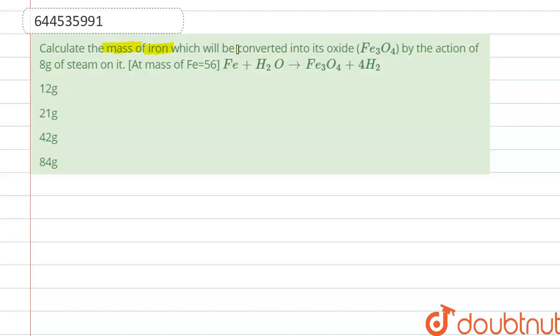Calculate the mass of iron which will be converted into its oxide Fe3O4 by the action of 8 grams of steam on it. Atomic mass of iron is given, which is 56, and the equation is given right here.